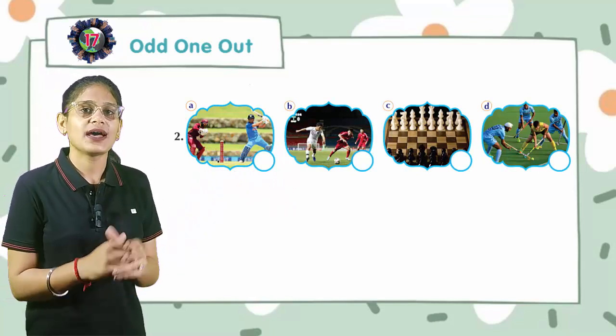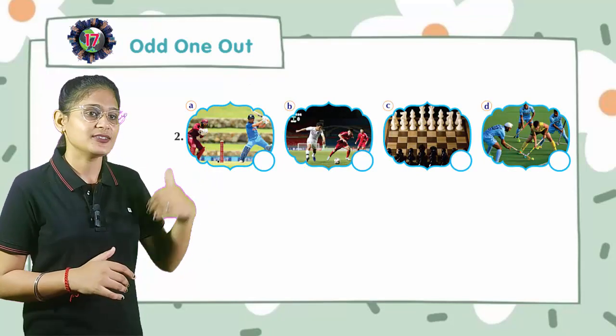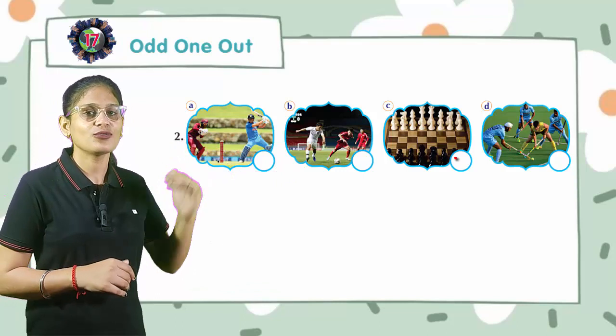Now come to the next. Here all games are outdoor but C, that is chess. It is an indoor game. So cross out.